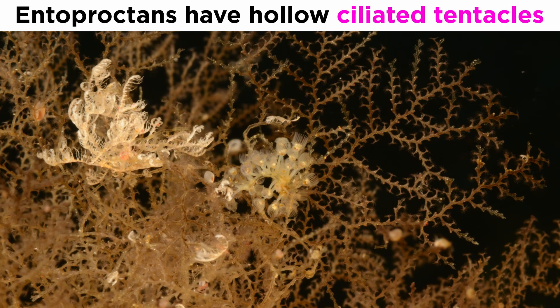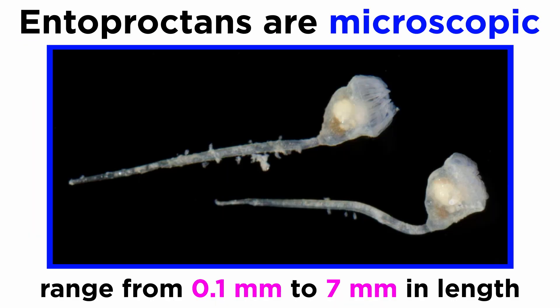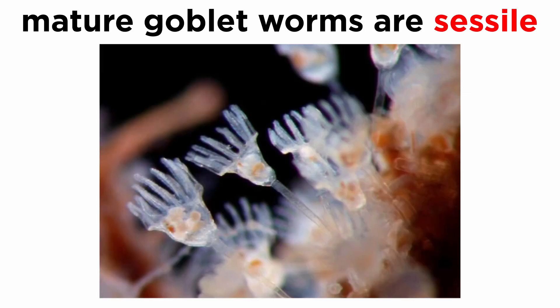Like the bryozoans, the entoproctins have ciliated tentacles, but unlike the bryozoans, entoproctin tentacles are hollow and tend to roll inward. Most are microscopic, ranging in size from 0.1 to 7 mm. Mature adults are sessile, with long stalks that terminate in a goblet-like anterior region, hence the common name goblet worms.